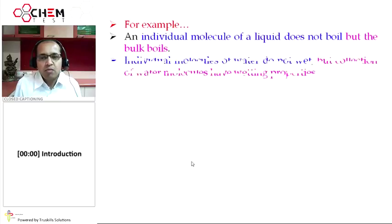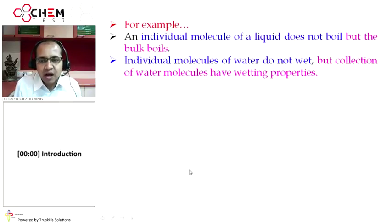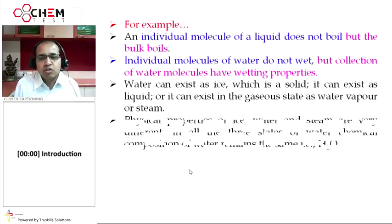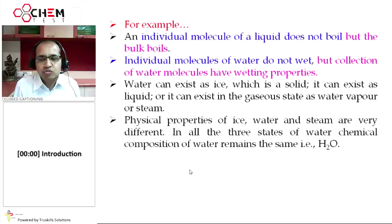Same way, individual molecules of water do not possess the property of wetting, but a collection of water molecules have wetting properties. Water can exist as ice, which is a solid. It can also exist as liquid and as gaseous water vapor or steam. Physical properties of ice, water, and steam are very different. In all three states of water, chemical composition remains the same, that is H2O.